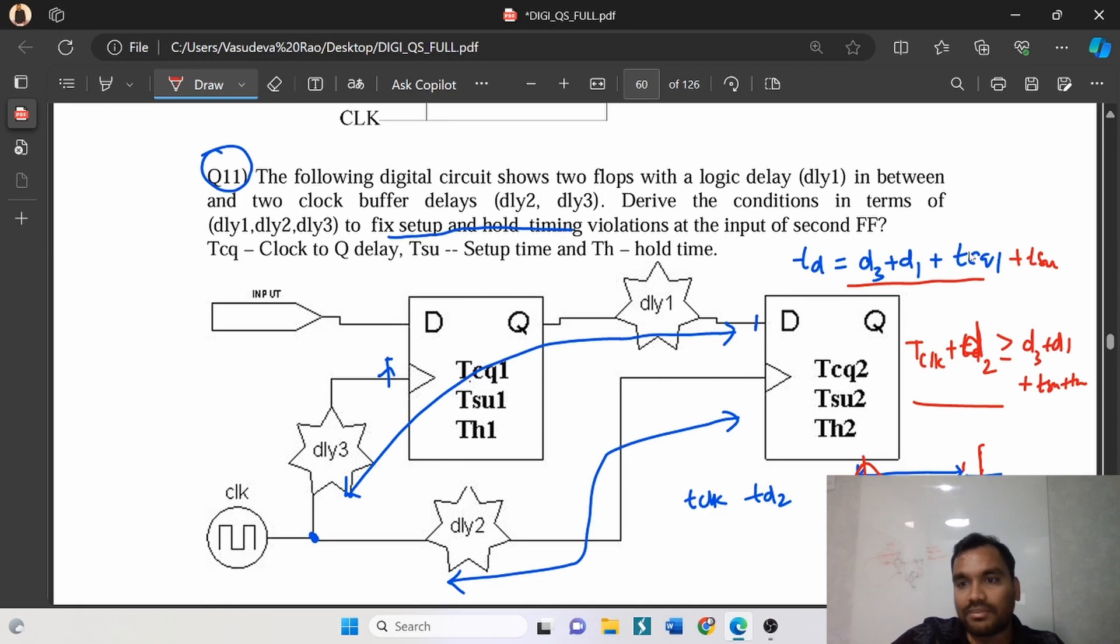So if anyone asks about the setup time: Tclock should be always greater than or equal to - d2 you push that side - so Tsetup time of flop 2 plus Tclock-to-Q delay of flop 1 plus the delay d2. If it goes to the right side: d1 plus d3 minus d2.